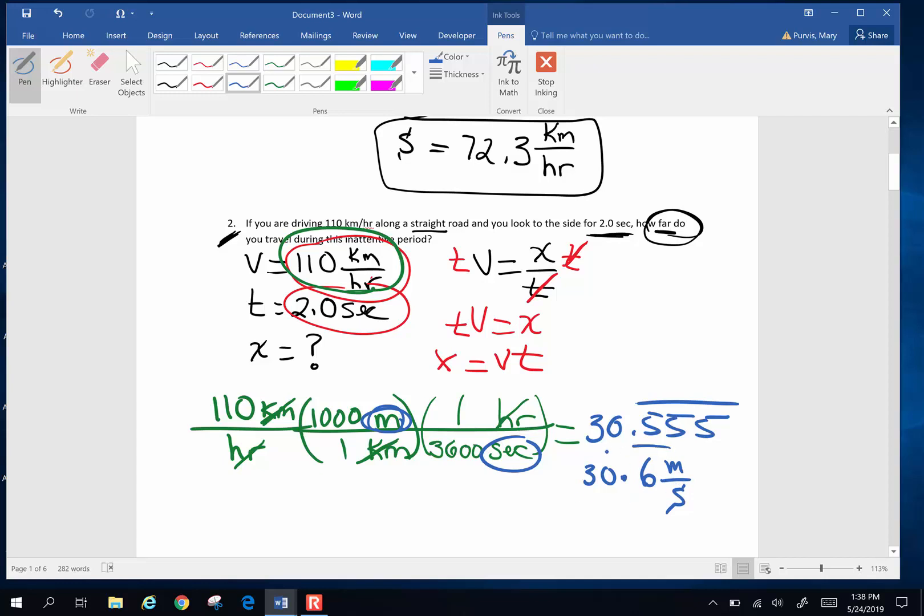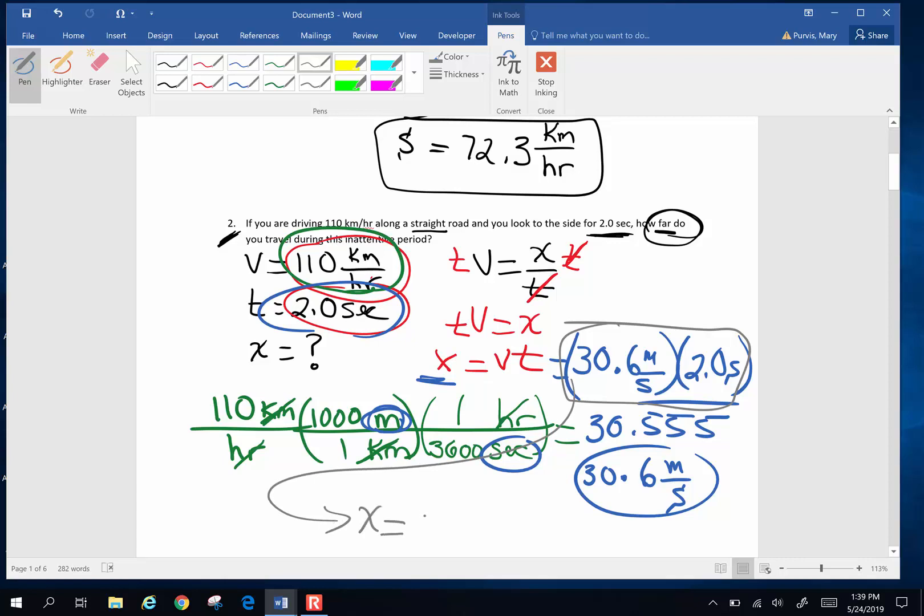Now I can go back and put this number and my seconds into this equation. Velocity 30.6 meters per second times 2 seconds. I ran out of room. I multiply times 2 and 30.6 times 2. The distance I will have traveled is 61.11 repeating. Seconds cancel seconds, meters. Now I'm going to look for sig figs. I had 3 sig figs here, 2 sig figs there, so I'm going to round this off. 61 meters is my final answer for problem 2.